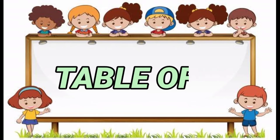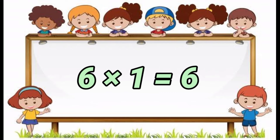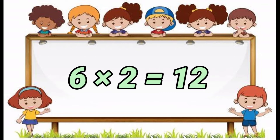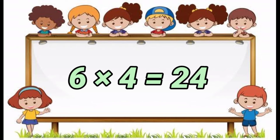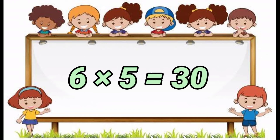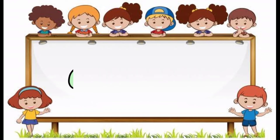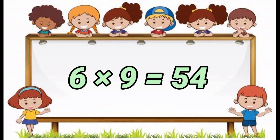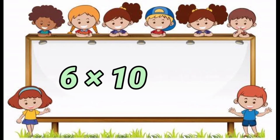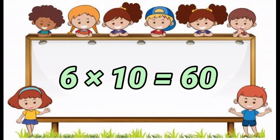6 10's are 25. Table of 6. 6 1's are 6. 6 2's are 12. 6 3's are 18. 6 4's are 24. 6 5's are 30. 6 6's are 36. 6 7's are 42. 6 8's are 48. 6 9's are 54. 6 10's are 60.